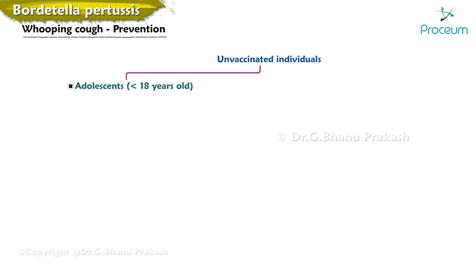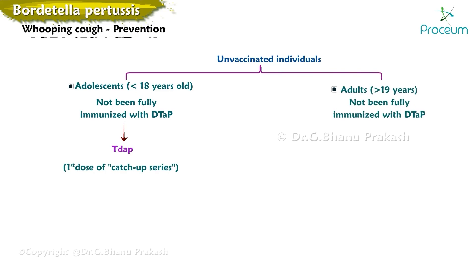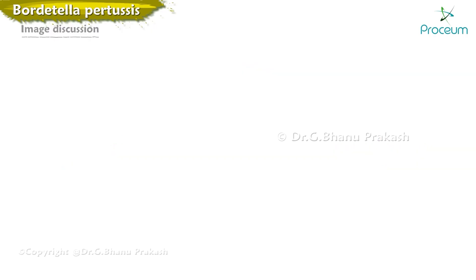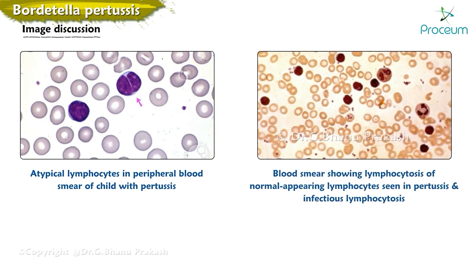For adolescents up to 18 years old who have not been fully immunized with DTaP, the TDaP vaccine should be given as the first dose of the catch-up series, with additional tetanus- and diphtheria-containing doses depending on prior vaccination history. A single TDaP booster should be administered to adults older than 19 years who have not previously received TDaP after age 11, as recommended by the Advisory Committee on Immunization Practices. The video concludes with images of atypical lymphocytes and lymphocytosis on peripheral blood smear as seen in pertussis.